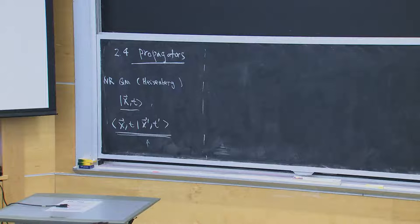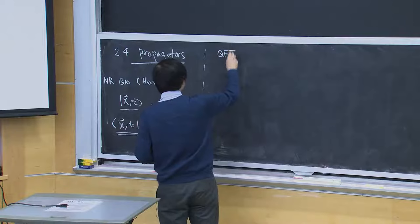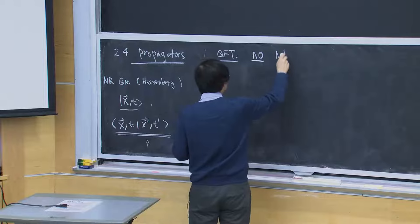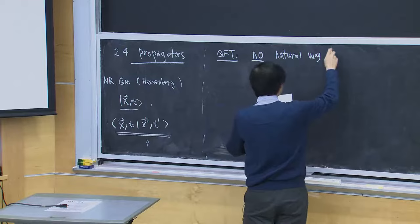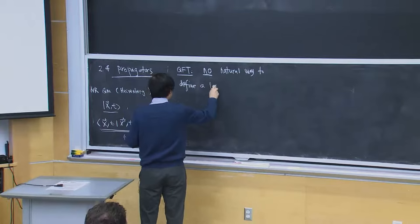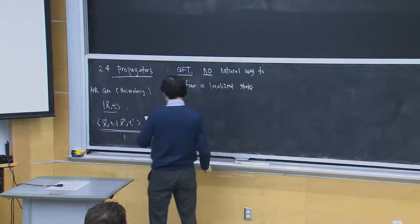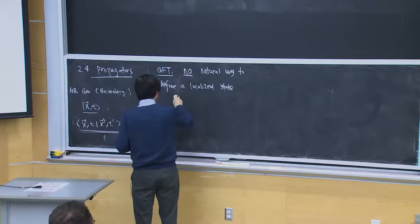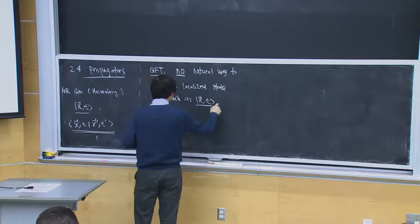So now we can ask: what are the analogous objects in free theory or in field theory? In QFT, there's no natural way to define a localized state, so there's no counterpart of this object.